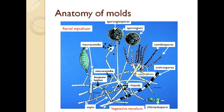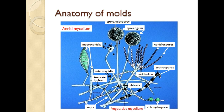Conidiospores are borne from a structure called a conidiophore. Sporangiospores are formed inside of a sac called a sporangium. We also see macroconidia as opposed to microconidia, and sometimes you'll find both on a mold species. Later we'll be looking at chlamydospores in the respiratory lab — chlamydospores are produced by Candida albicans, a yeast that causes thrush. We also see arthrospores; the prefix 'arthro' refers to joint, so you can see that these spores are formed from the breaking up of aseptate hyphae.